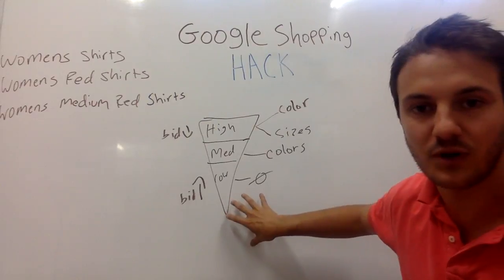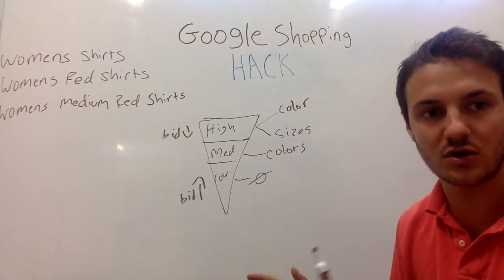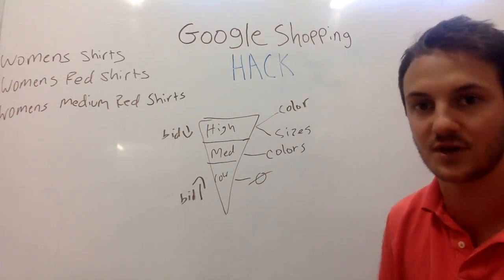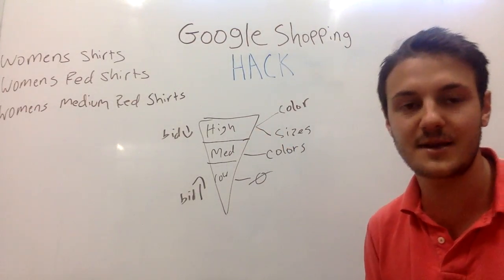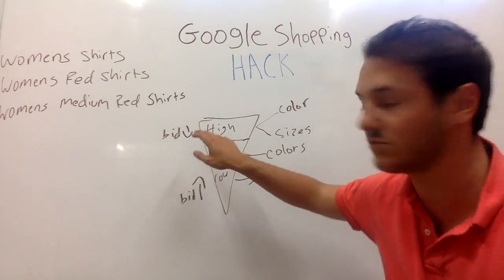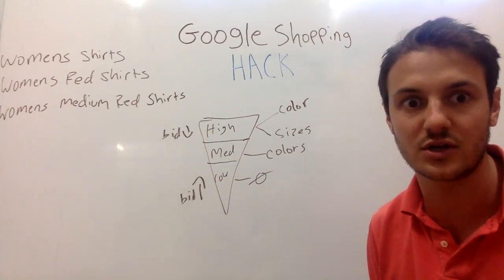What you'll find is that the low priority campaigns will have very long search terms that should be higher converting. The high priority will have shorter search terms which might not be as high converting, but if your bid is low enough you may actually see really good conversion rates.